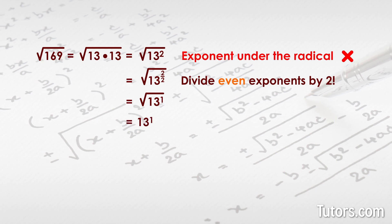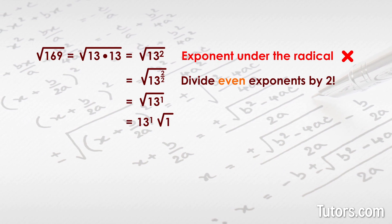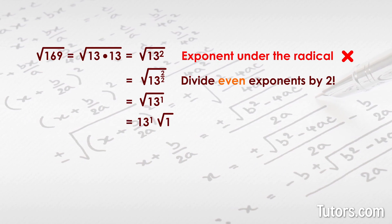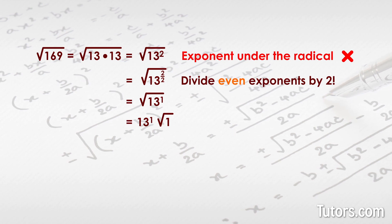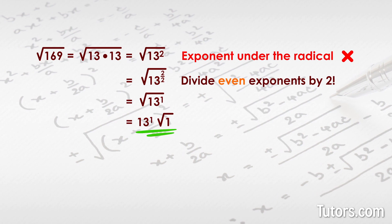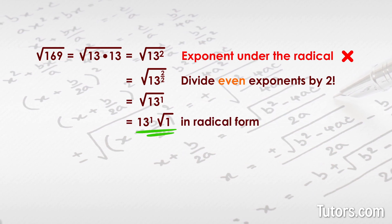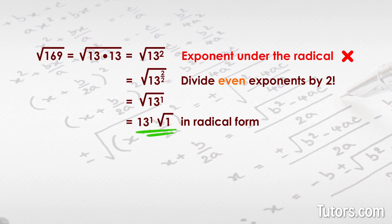Move 13 to the first power outside the radical sign and leave 1 under the radical sign, since the square root of 169 cannot be equal to nothing. 13 to the first power times the square root of 1 is the square root of 169 in radical form. It is the simplest the answer can be while including a radical symbol.